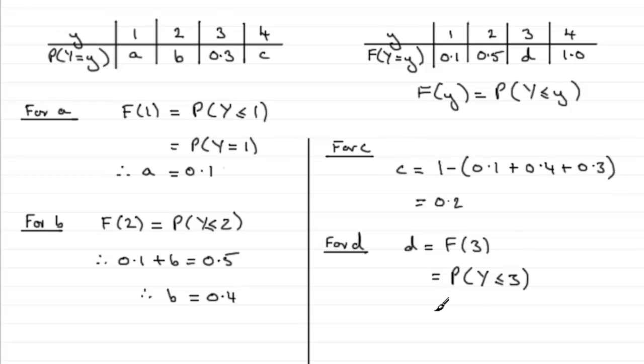So it's going to be equal to a plus b plus 0.3. So we've got that a is 0.1, b is 0.4, and the 3 is 0.3. So if we add that up, we've got 0.8. And there we have it: a, b, c, and d.